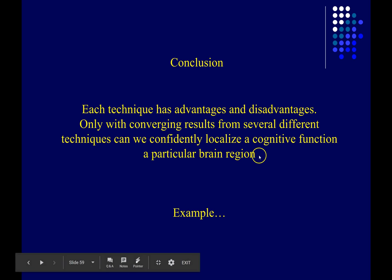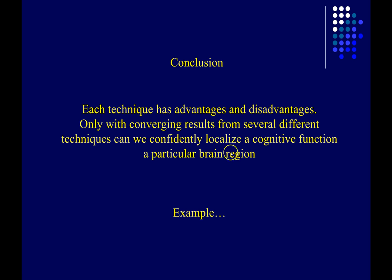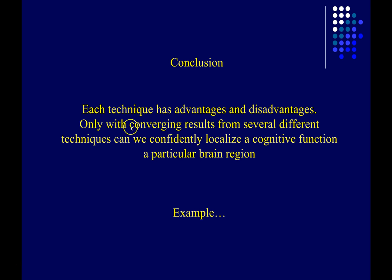I should mention that things have changed a bit in the field since this slide was made. There's a trend away from simply looking for which parts of the brain do what. It's becoming clear that different parts of the brain do different things depending on the context — different brain regions can form dynamic networks with one another, such that the functions of individual areas can change depending on context. So it gets more complicated than just saying 'X brain region does Y.'